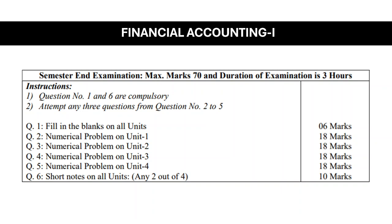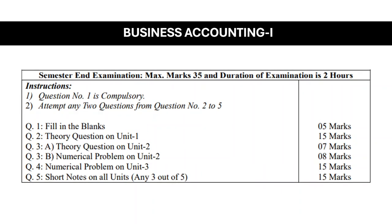Now, what will be the paper pattern of Business Accounting? Business Accounting 1 is a 2-credit subject. Therefore, the Semester End Exam for Semester 1 will be conducted for 35 marks and the duration will be 2 hours. In the question paper of Business Accounting 1, there are a total of 5 questions. Question No. 1 is compulsory, and you have to solve any 2 questions from Question No. 2, 3, 4, and 5.